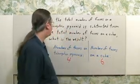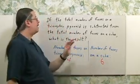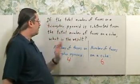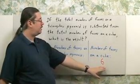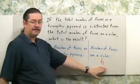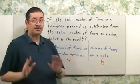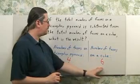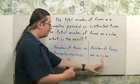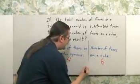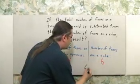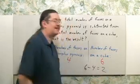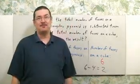And what do they want? They want you to subtract this value from this value. And with subtraction, order counts. This from this means we write the six first, minus the four — the result is two.